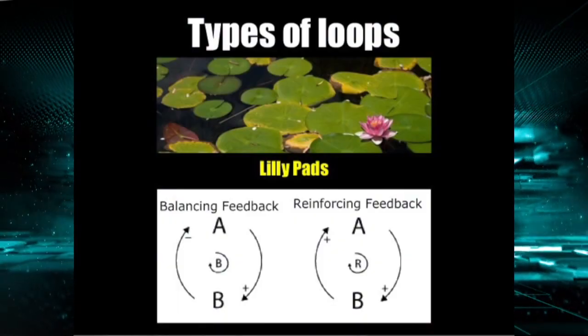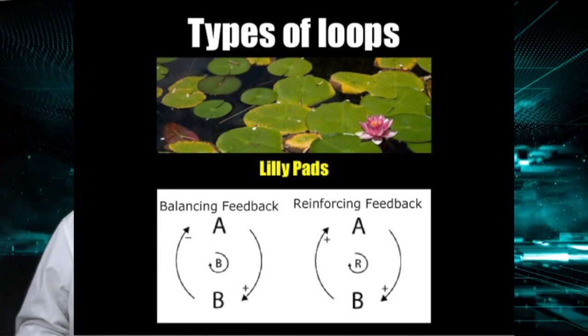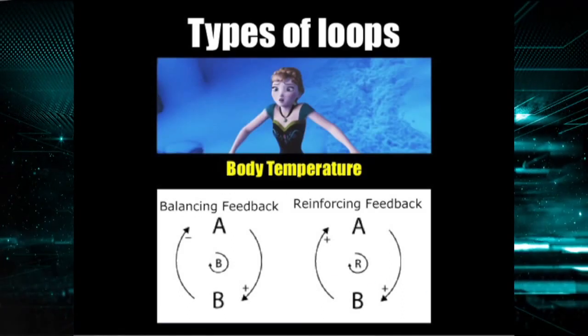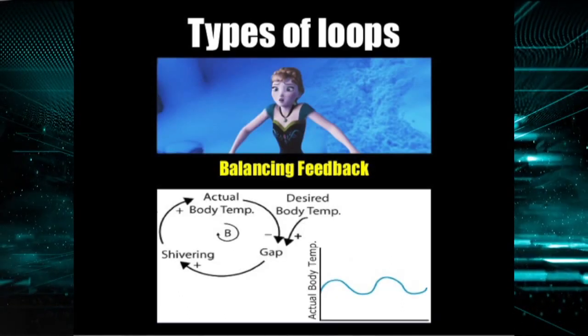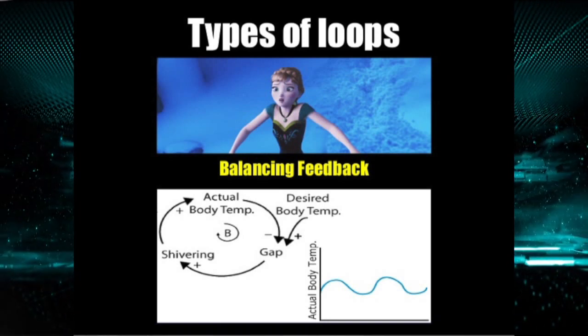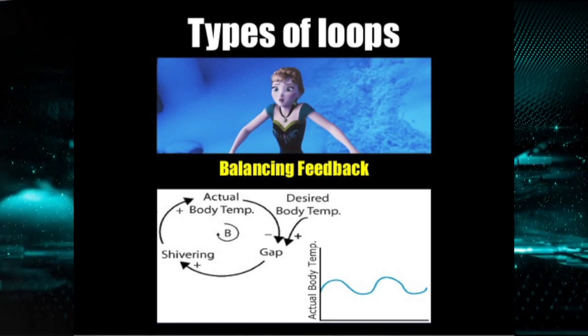In the living pad example, we see a basic reinforcing loop. More complex loops can have several steps. For body temperature, we can regulate by oscillating shivering or not shivering, depending upon our body temperature.